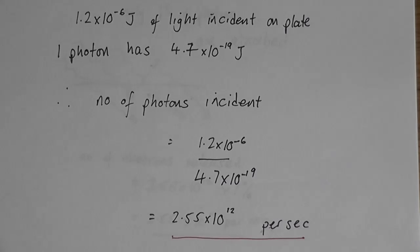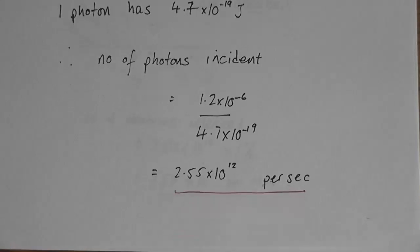I know that a photon has 4.7 times 10 to the minus 19 joules. Therefore the number of photons incident on that plate in one second is 1.2 times 10 to the minus 6 divided by 4.7 times 10 to the minus 19, and that gives you 2.55 times 10 to the 12 photons per second.